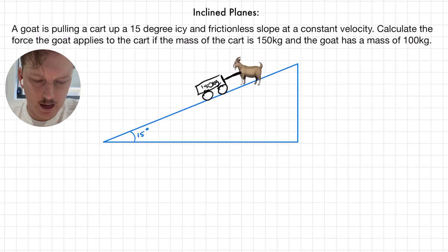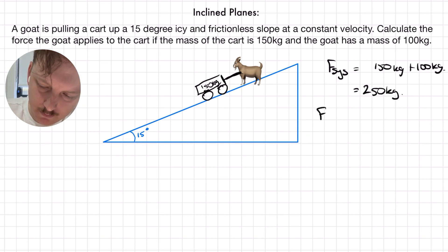Our next example has a goat pulling a cart up a 15 degree icy and frictionless slope with a constant velocity this time. We have to calculate the force that the goat applies to the cart if the mass of the cart is 150 kilograms and the goat has a mass of 100 kilograms. The first thing I'm seeing here is that we have a system mass of 150 kilograms plus 100 kilograms. So, that's 250 kilograms. Now, in this case, if f equals ma, we're moving at a constant velocity, which means our acceleration is 0. So, our net force on this system has to equal zero.